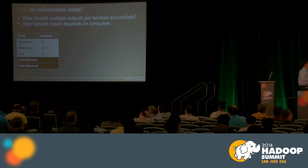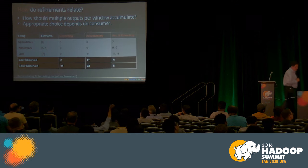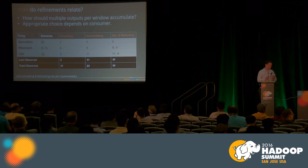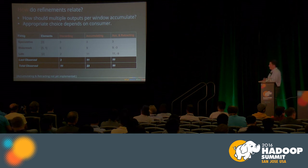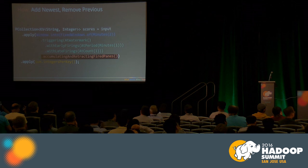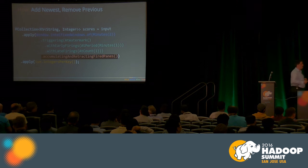The fourth consideration is how refinements relate to each other — when producing multiple results for the same window. There are three modes: discarding, accumulating, and accumulating and retracting. The key is whether the consumer is aggregating, or we're aggregating on behalf of the consumer. Again, this is a single-line change to your program, and your core business logic — your sum or your machine learning model — will not change.